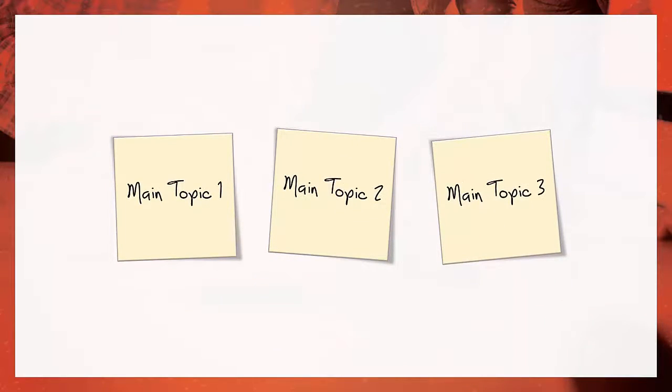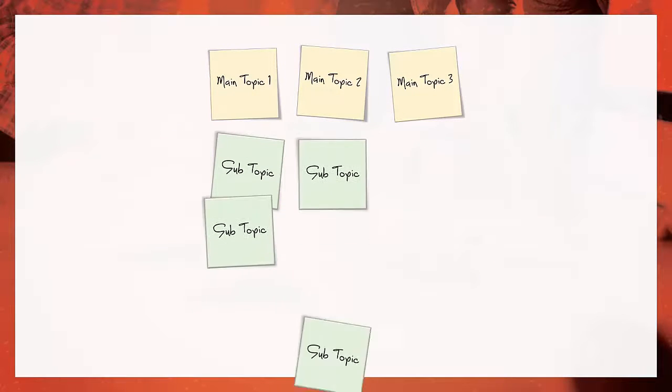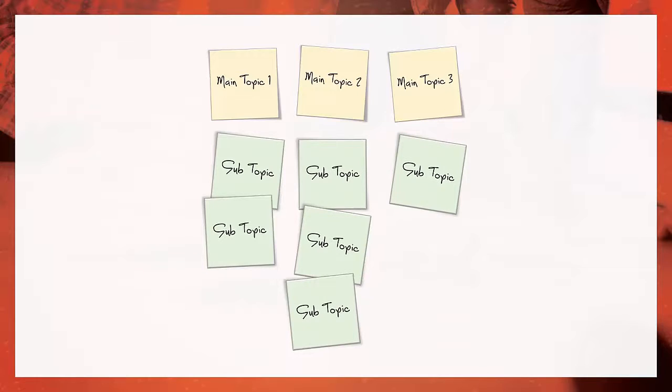Start by assigning a sticky note for each of your main topics and put them up on the wall. Next, assign a sticky note for each of your subtopics and figure out how they relate and where they live beneath each of your main topics. At this point, you don't need to worry about how the topics flow from one to another or where you're going to add interactivity or quiz questions. This is just about getting all of those topics up where you can see them and move them around.